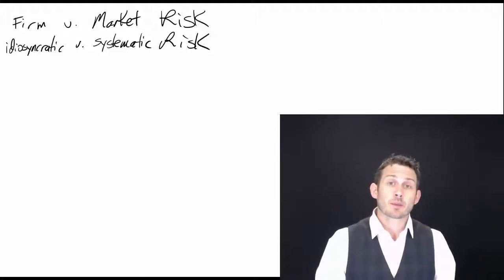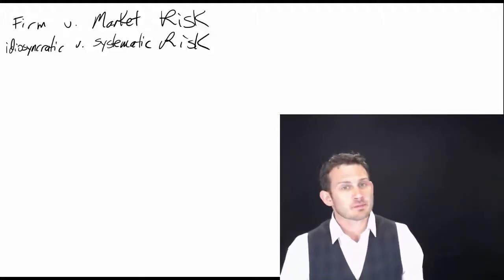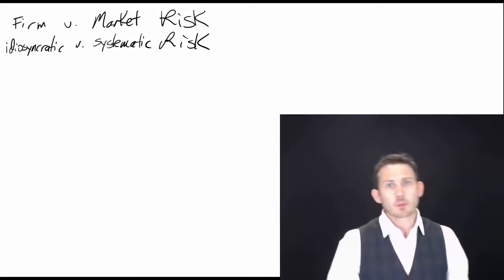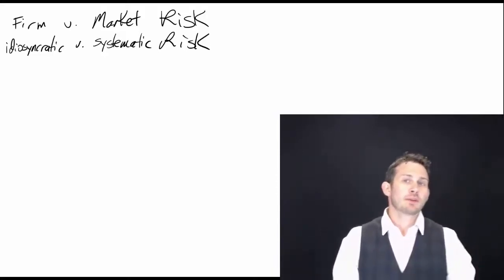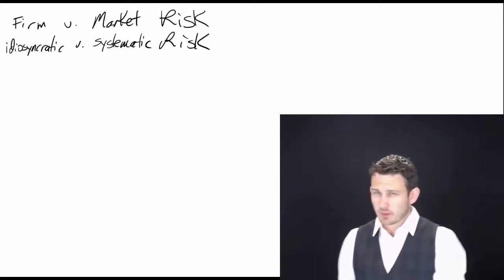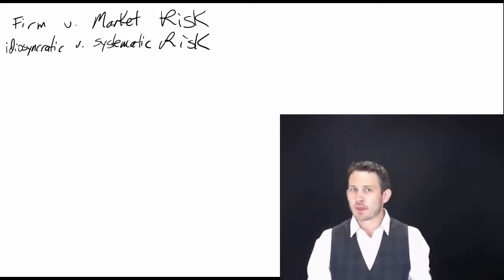Hello, today we are talking about the difference between firm and market risk. The other thing that we know of these risks is that we can call them idiosyncratic or systematic risk. Sometimes you'll hear systematic referred to as systemic risk. It's basically the same thing.